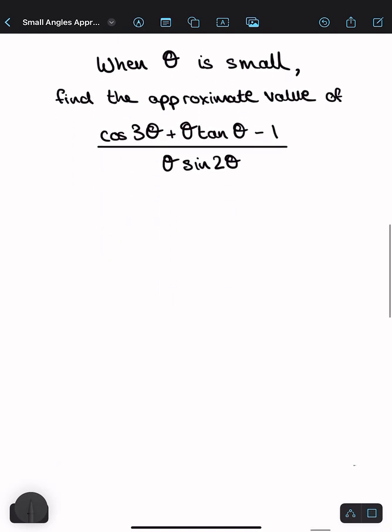So we have, when theta is small, find the approximate value of cos 3θ plus θ tan θ minus 1 all divided by θ sine 2θ.